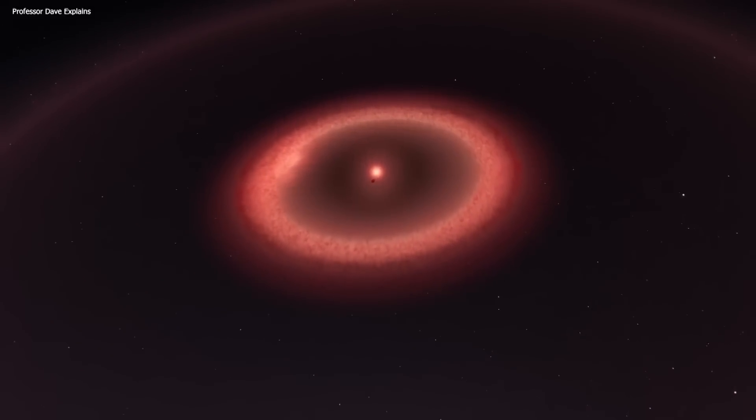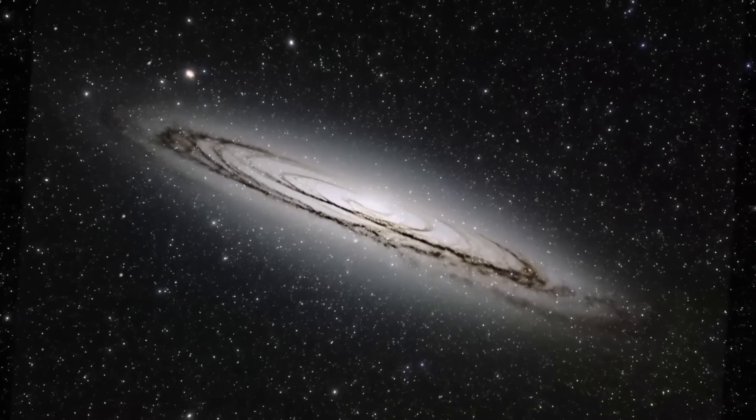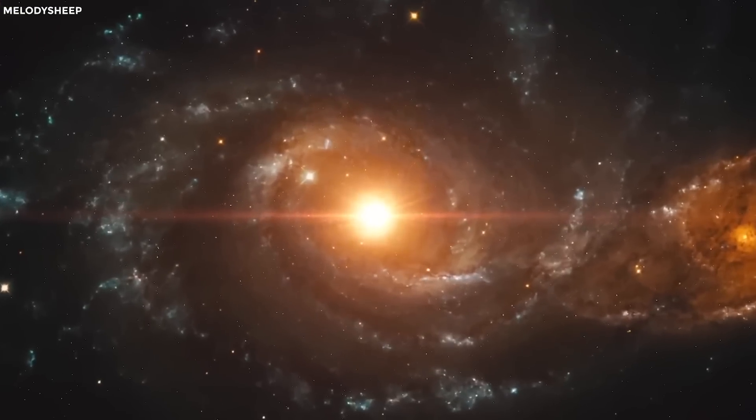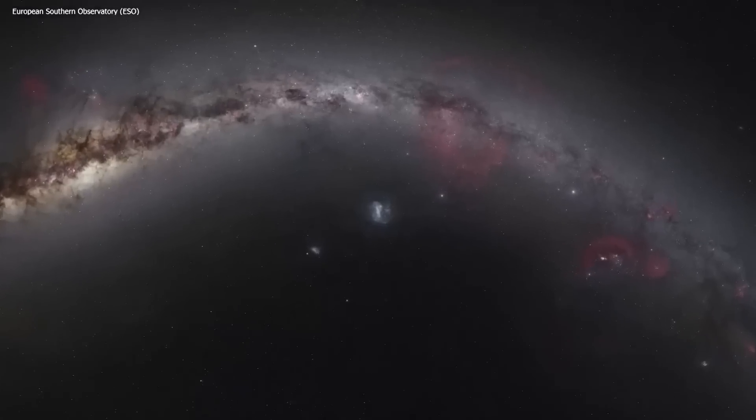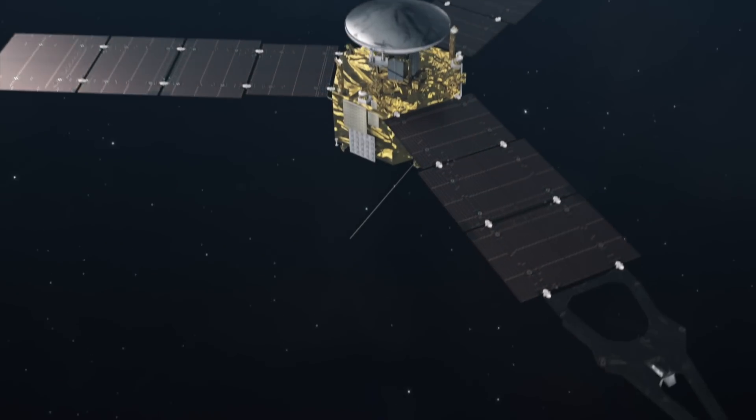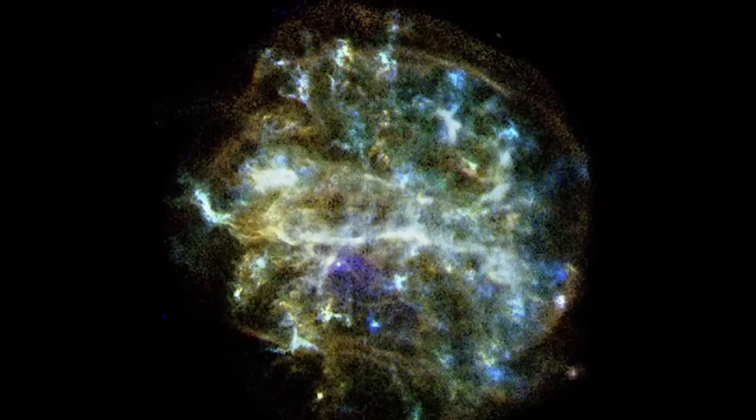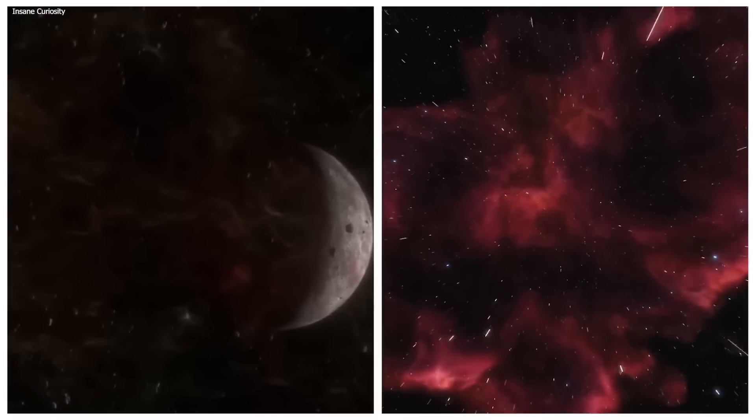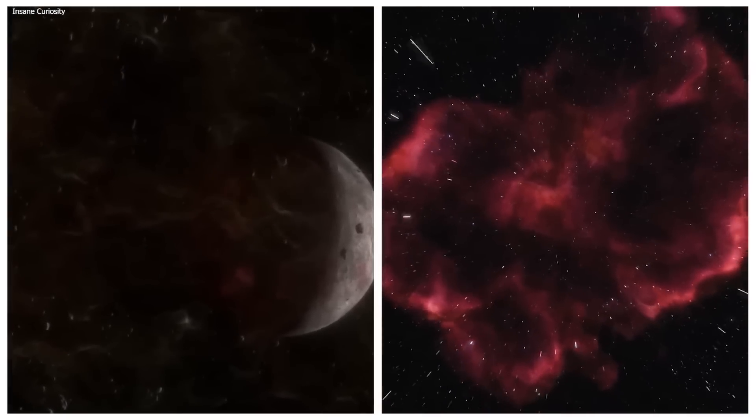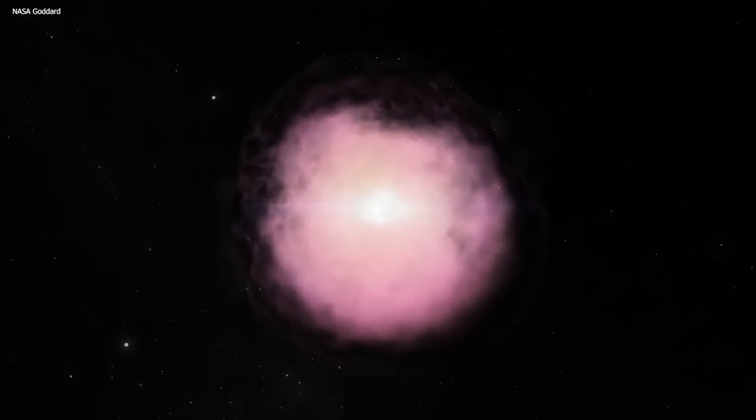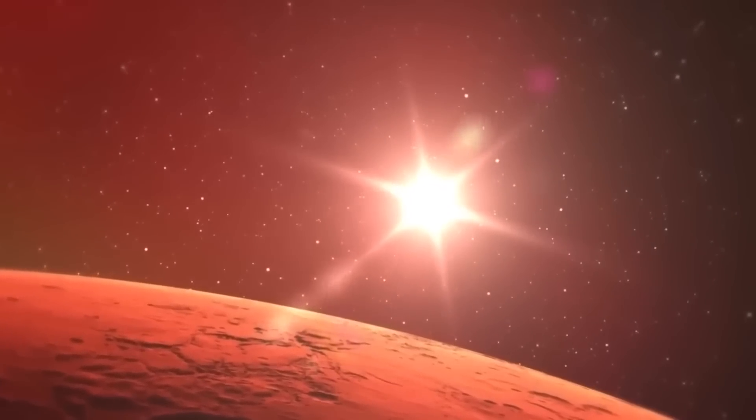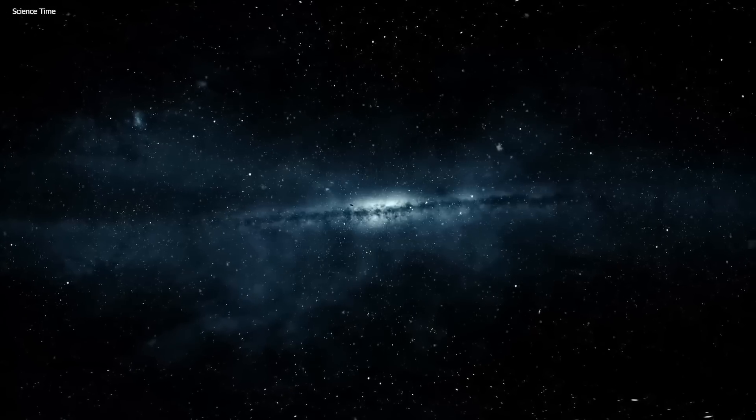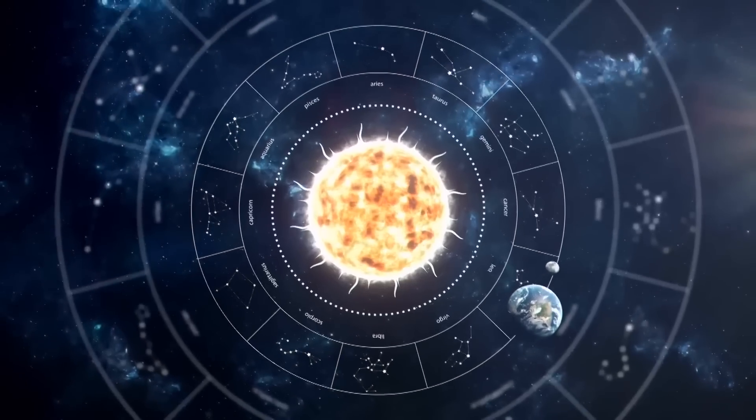While the timing of Betelgeuse's eruption remains uncertain, if it were to happen, it would become extremely bright, potentially matching the brightness of the full moon and even visible during the daytime. However, even if Betelgeuse were to explode, the impact on Earth would be limited. The explosion would produce a cloud of gaseous debris and a highly luminous core, but the distance between Betelgeuse and Earth, approximately 640 light-years, ensures that any repercussions would not affect us significantly.